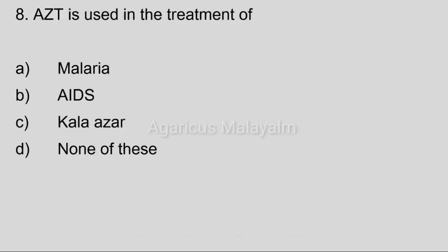Eighth question: AZT is used in the treatment of. AZT full form: 3-azido-2,3-dideoxy-thymidine. Answer options — Option A: Malaria. Option B: AIDS. Option C: Kala azar. Option D: None of these. Correct answer: Option B, AIDS.